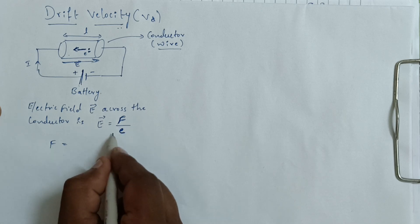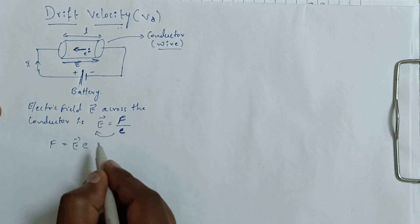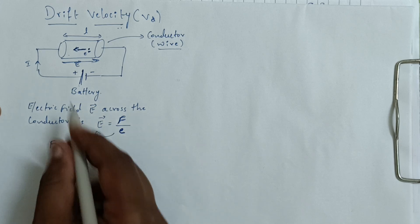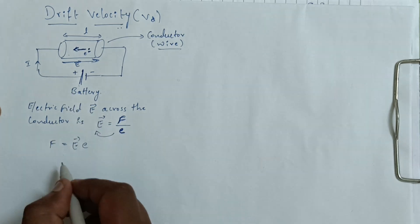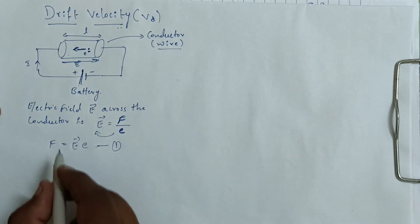This can be rearranged as F equals electric field capital E into small e. Small e means charge on the electron. We can take this as equation 1.